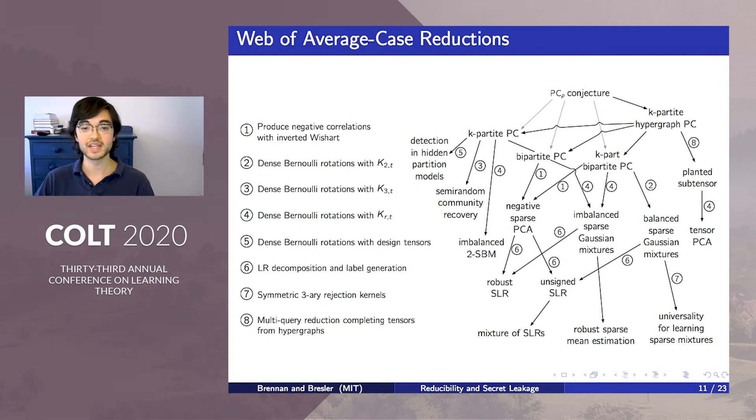Our reductions map to a range of problems including robust sparse linear regression, mixtures of sparse linear regressions, robust sparse mean estimation, a universality principle for learning sparse mixtures, dense variants of the stochastic block model, and detection and hidden partition models, among others.